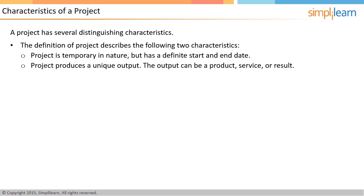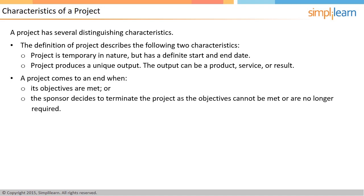Secondly, the project is supposed to produce a unique output. The output could be a product, service, or result. There can be many common activities between two projects, but the outcome of each project should be unique in some way or another. A project ends when either the objectives are met, or the project is terminated because the objectives will not or cannot be met. The other reason to terminate the project can be that the need for the output no longer exists. Usually, the sponsor of the project takes a call about the closure of the project.